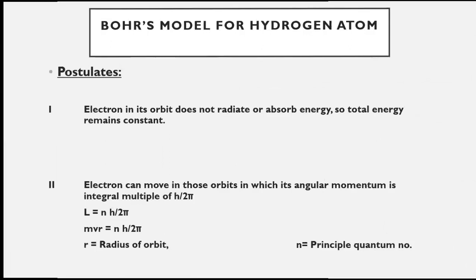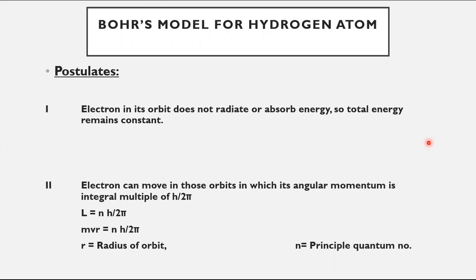Bohr successfully described the hydrogen atom. The Bohr model for the hydrogen atom has three postulates. Postulate 1: an electron in its orbit does not radiate or absorb energy, so the total energy of the electron remains constant while it stays in its orbit.